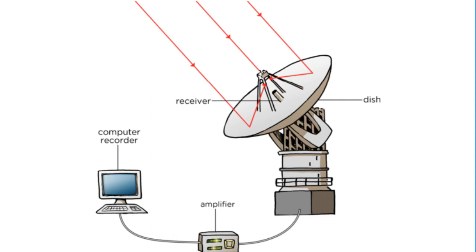Now we're going to talk about the basics of how a single-dish radio telescope works. Radio telescopes vary widely, but they all have three basic components: first, a large radio antenna; second, a sensitive radiometer or radio receiver; and third, a recorder. The sensitivity of a radio telescope — its ability to measure weak sources of radio emission — depends on both the area and efficiency of the antenna and the sensitivity of the radio receiver used to amplify and record the signal.